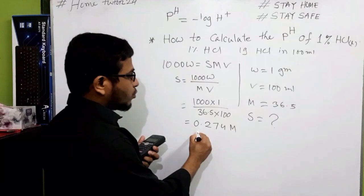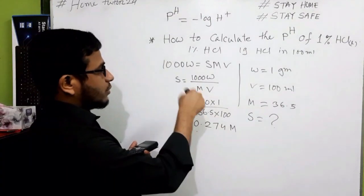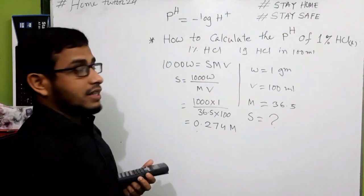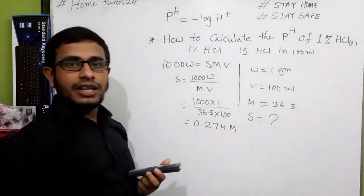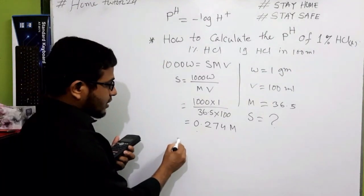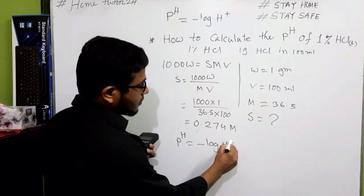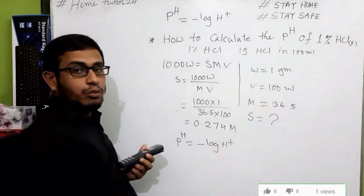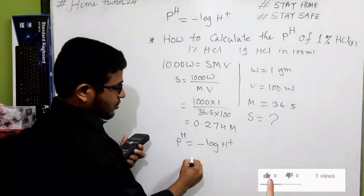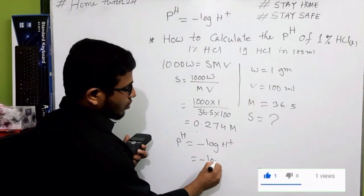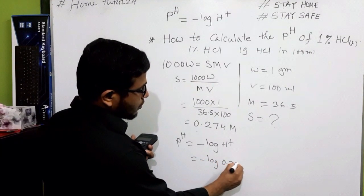With the help of this molar concentration we can calculate the pH of this solution. As it is a strong acid, we can directly calculate the pH. The pH will be minus log of H plus. Here H plus is the molar concentration of HCl, so we can say that minus log of 0.274.